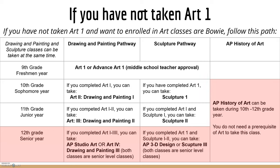The other option is Sculpture. If you've completed Art 1 and Sculpture 1 through 2, you can take AP 3D Design and Sculpture 3. Both are senior level classes, but Sculpture 3 every once in a while will have a junior. AP History of Art is also still available. For all AP classes, if you complete and pass the AP exam you can earn college credit.